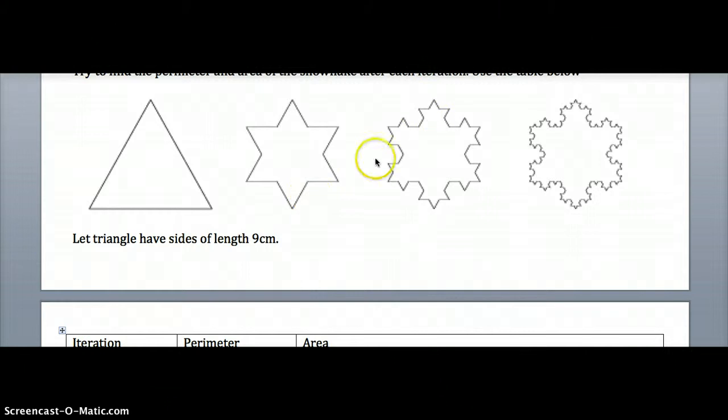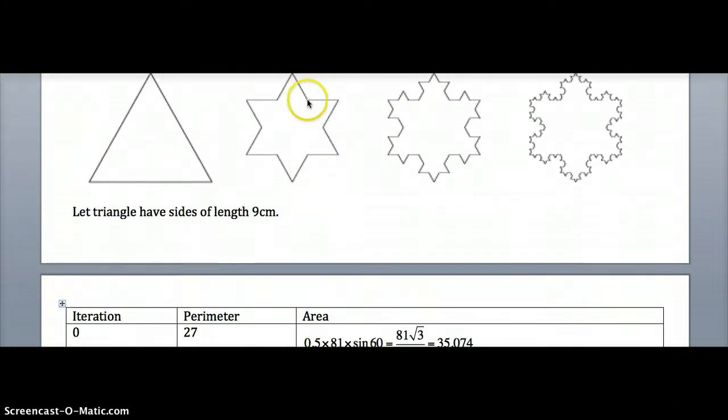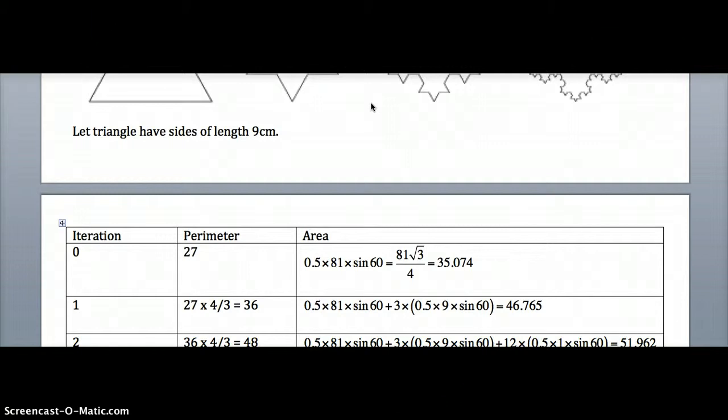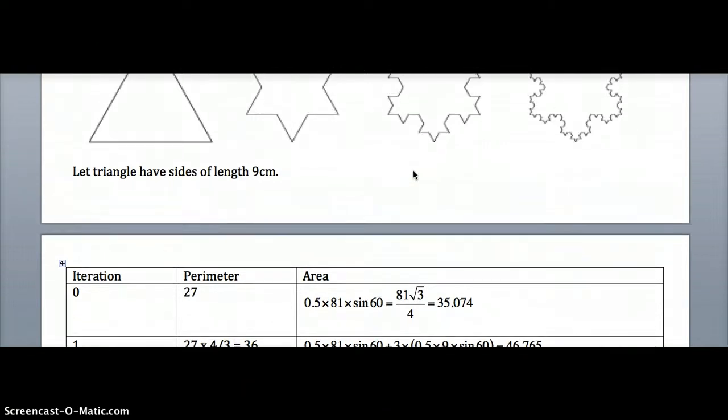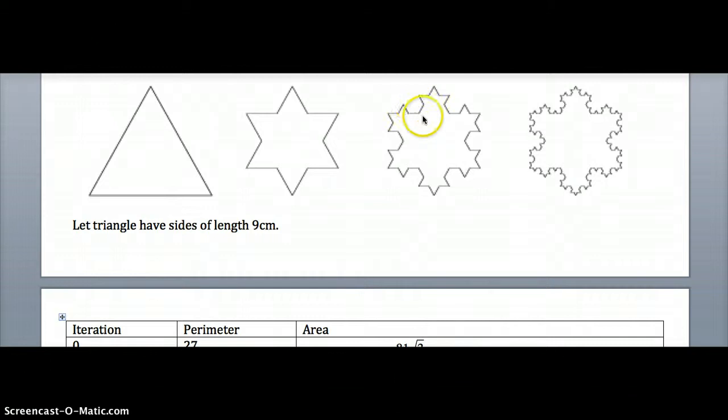Here you could just multiply by four over three again because the original side was length three, and you've taken out the middle third and replaced it by two lines the same length. So you got four little lines here, four thirds so to speak, where you originally had three thirds. So again the multiplying factor is four over three, and 36 by four over three is 48.